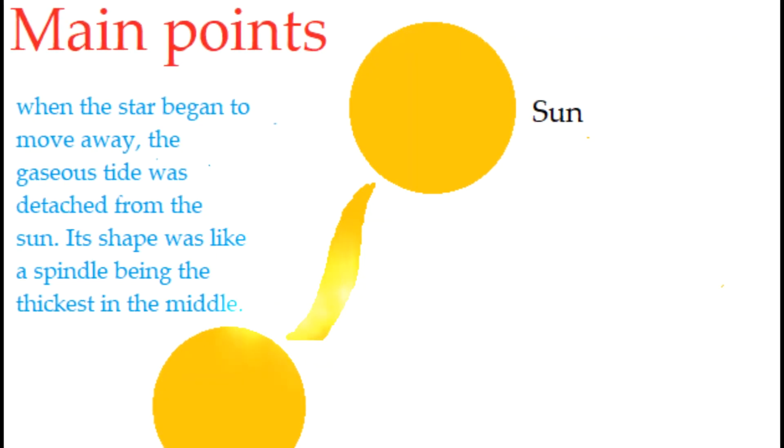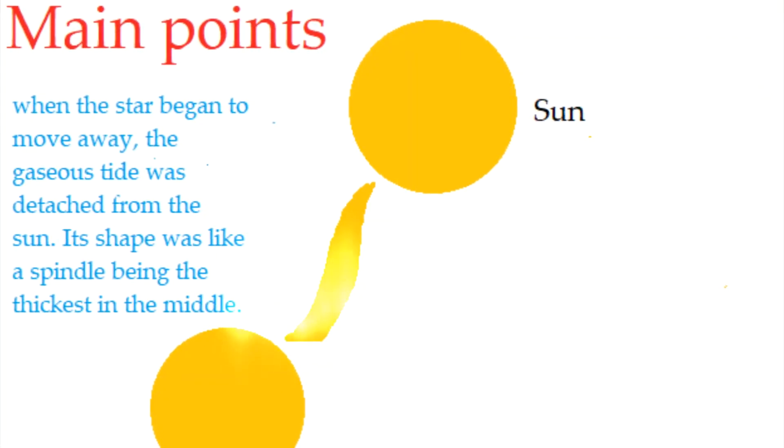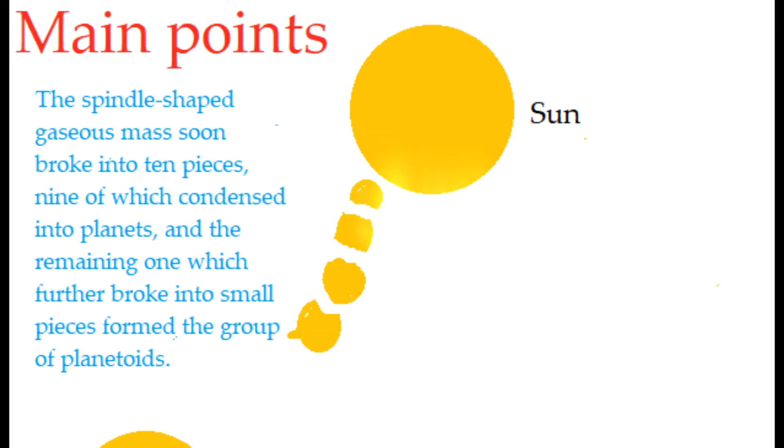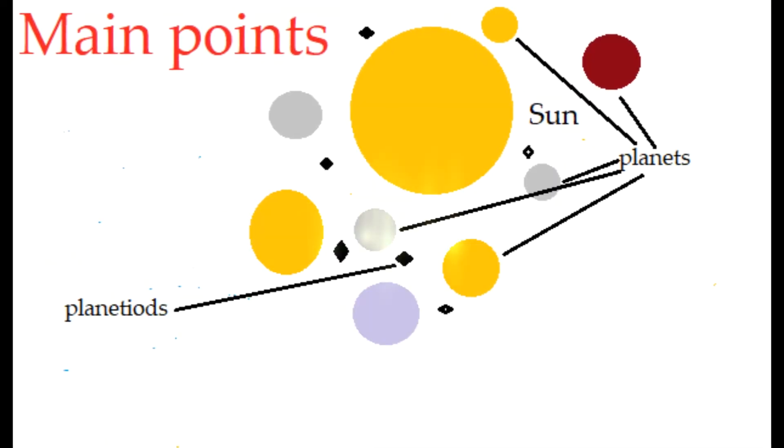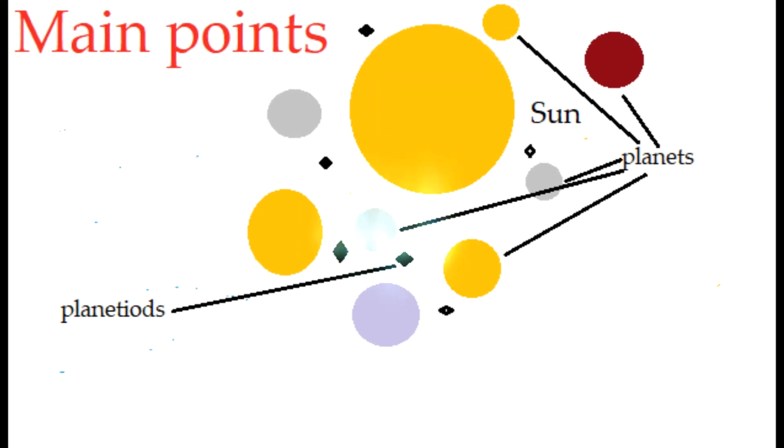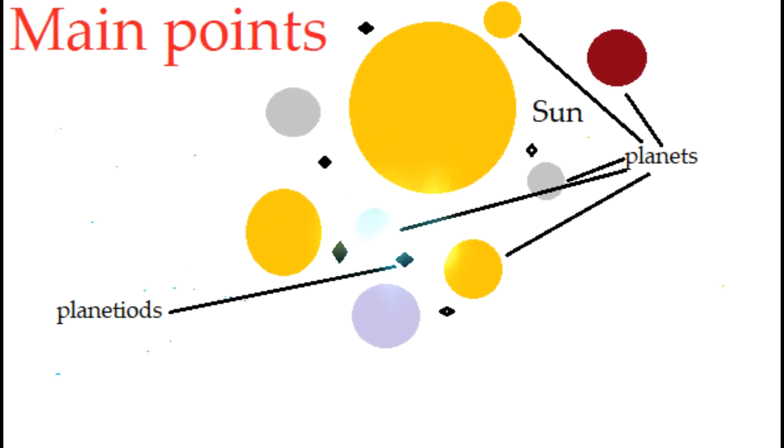Its shape was like a spindle, being the thickest in the middle. The spindle-shaped gaseous mass soon broke into ten pieces, nine of which condensed into planets, and the remaining one which further broke into small pieces formed the group of planetoids.